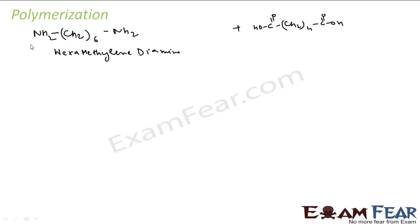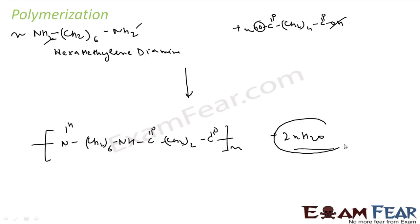They form nylon 66. What happens is: from here when the hydrogen goes off, all these CH2 groups remain intact. This hydrogen reacts with this OH - when the water molecule comes out - and this hydrogen and this OH also react when the water molecule comes out, and we get 2n molecules of water.